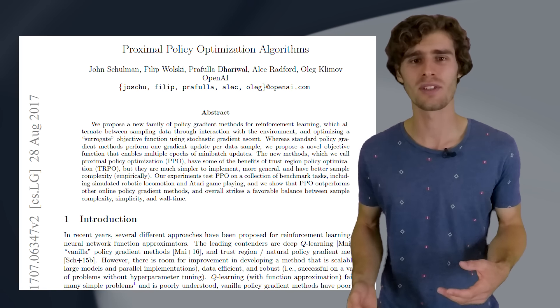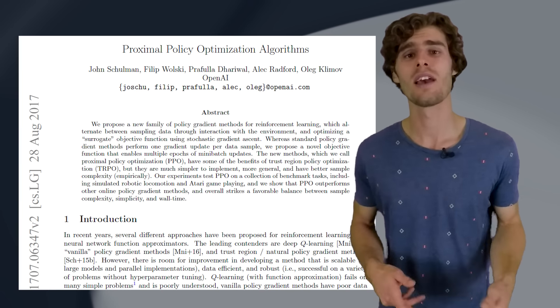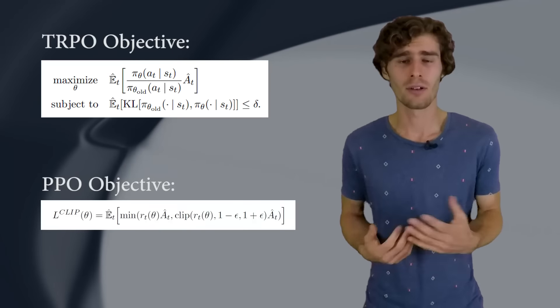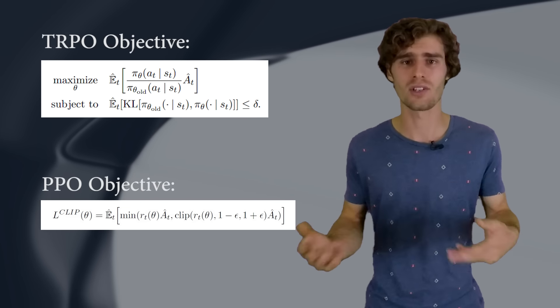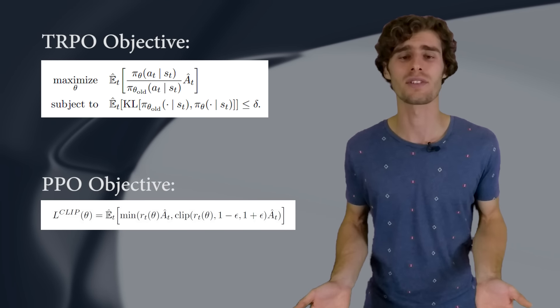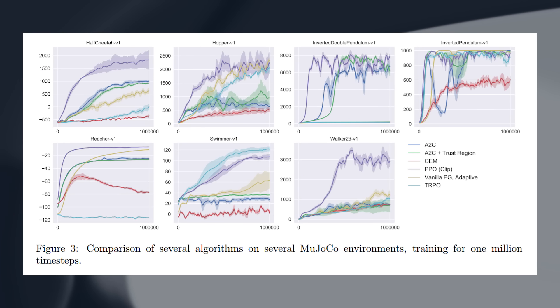This means that the data distributions of our observations and rewards are constantly changing as our agent learns, which is a major cause of instability in the training process. Apart from having this problem with varying training data distributions, reinforcement learning also suffers from a very high sensitivity to hyperparameter tuning and things like initialization. Imagine that your learning rate is too large — you could have a policy update that pushes your policy network into a region of the parameter space where it collects the next batch of data under a very poor policy, causing it to never recover again.